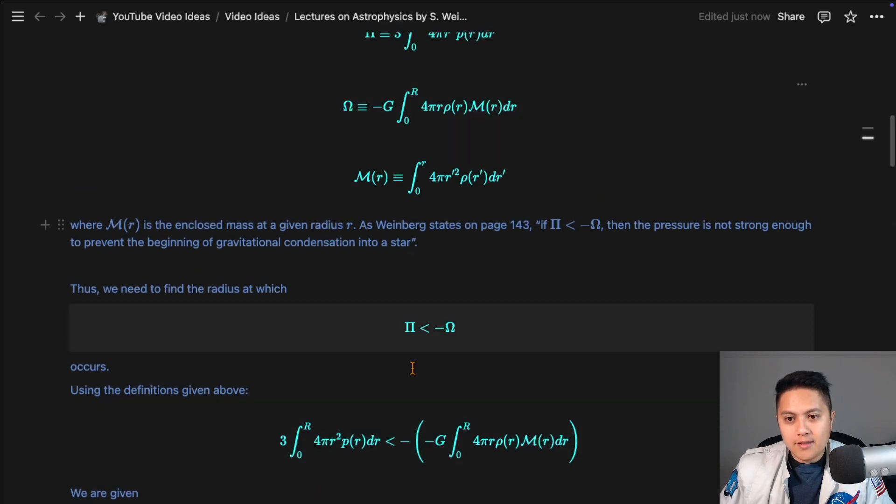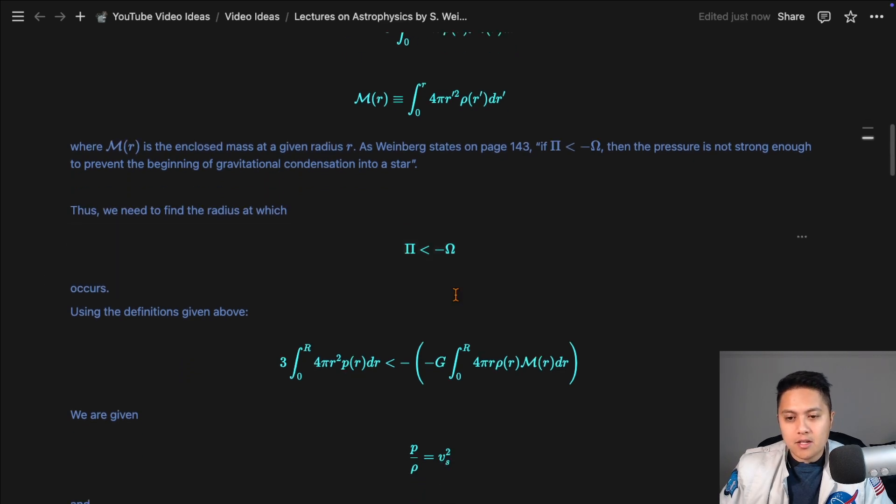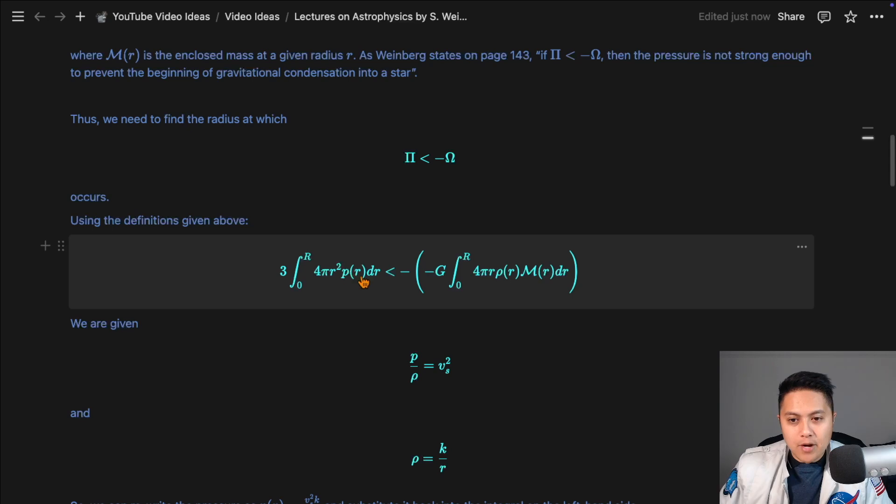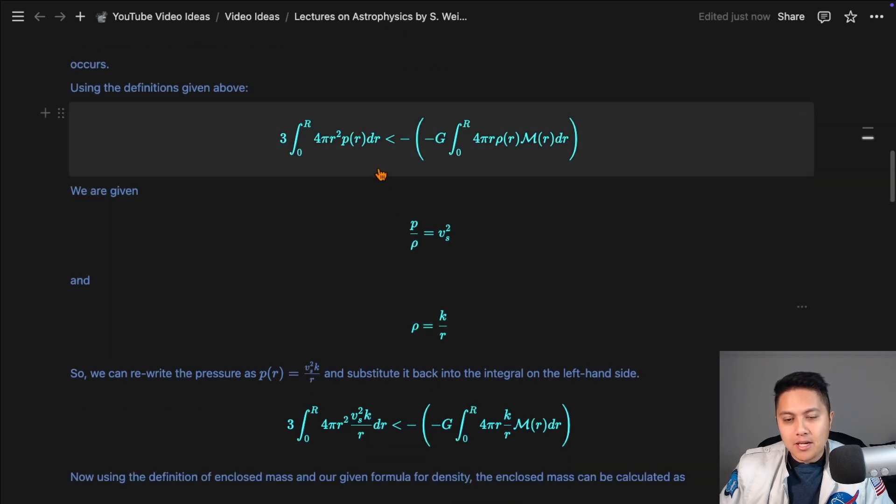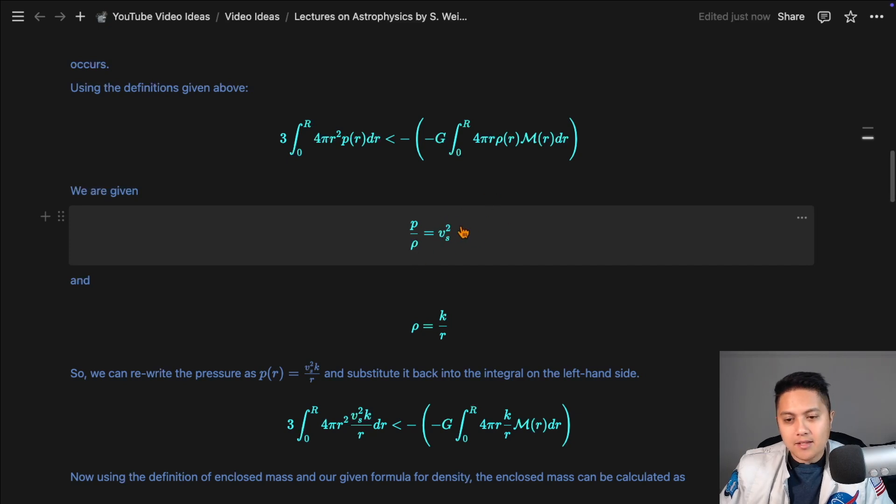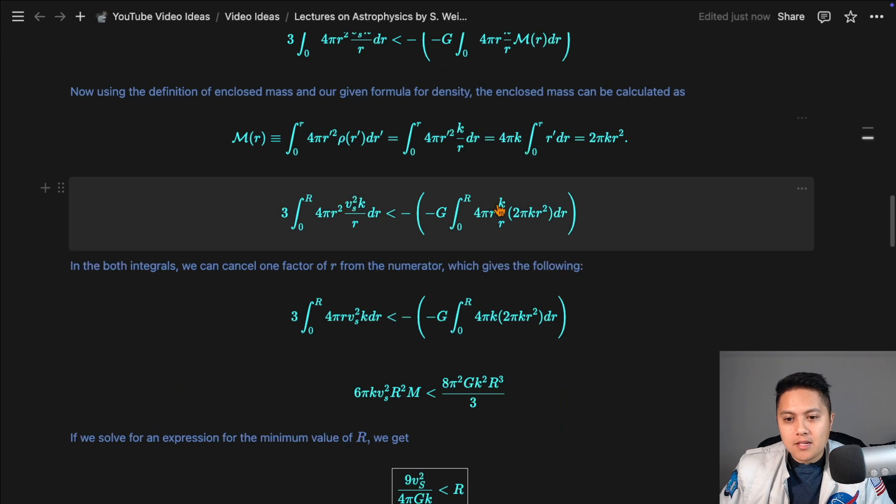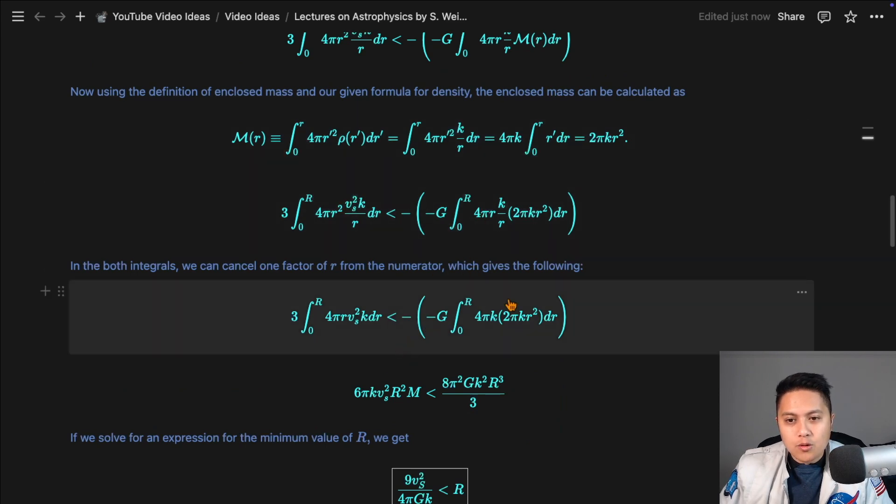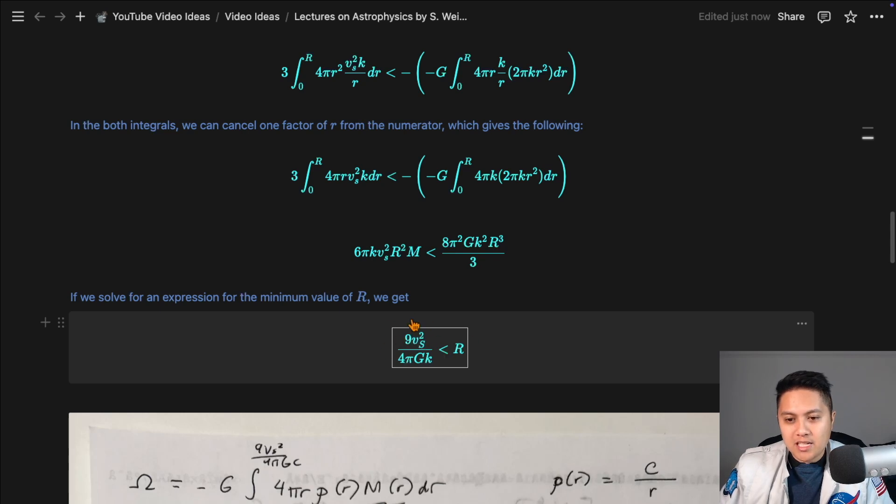So we just have to set up this inequality here, use the integrals that define both this capital pi and this omega representing the thermal and the gravitational energy. And because there is a relationship between the pressure and the density given by this ratio here, you can substitute the definition of density and plug it into both the p and the rho here, because the p and rho are just related by this constant.